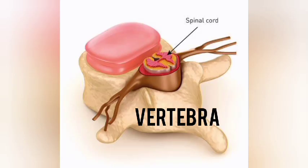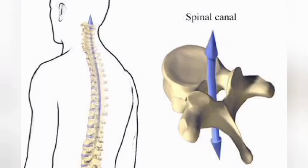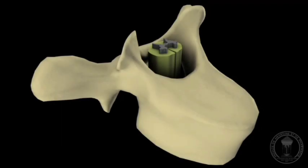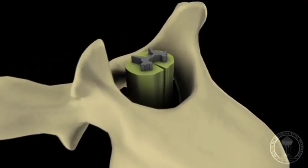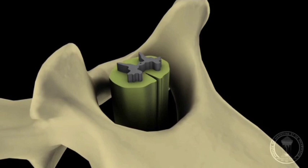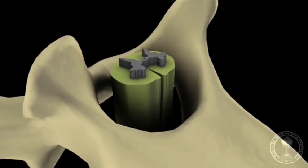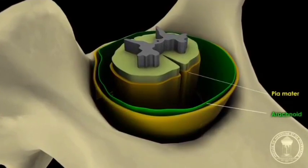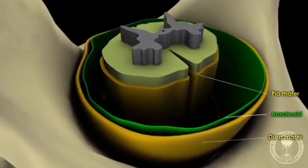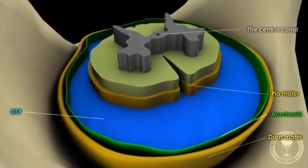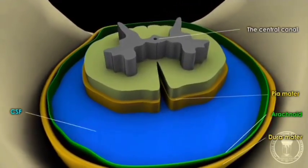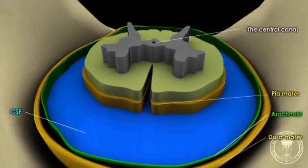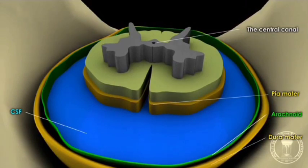Spinal cord is a cylindrical structure lying in the neural canal of the vertebral column. Like the brain, the spinal cord is also covered by the three membranes of meninges: the inner pia mater, middle arachnoid membrane, and the outer dura mater. The CSF or cerebrospinal fluid is present between the arachnoid membrane and pia mater.